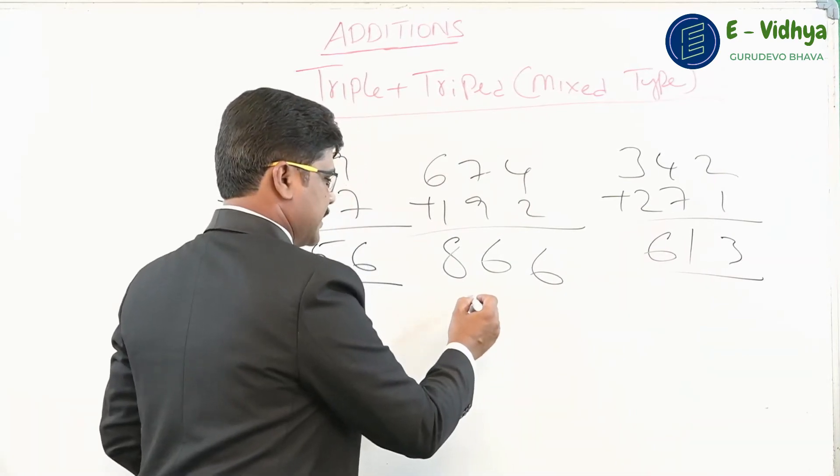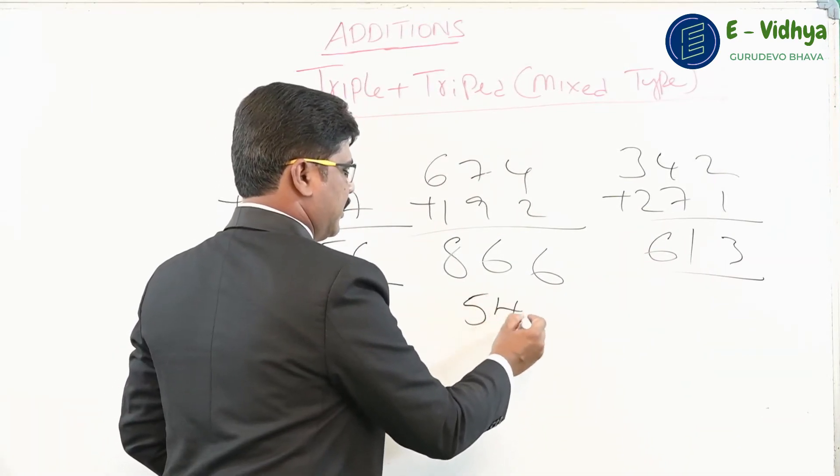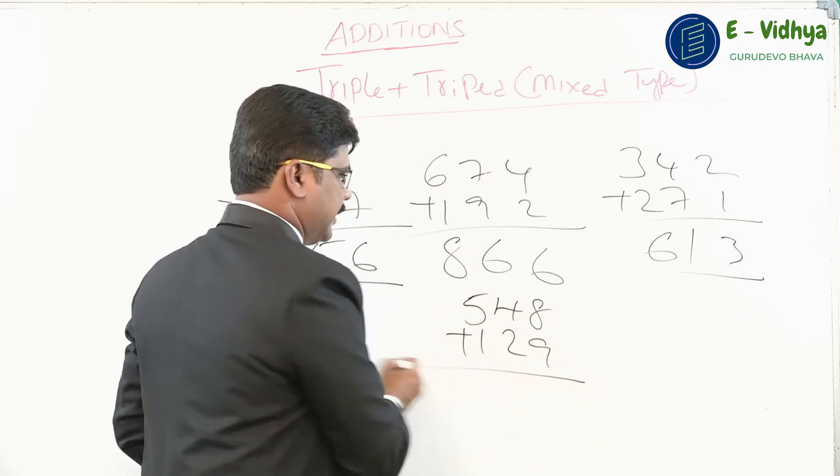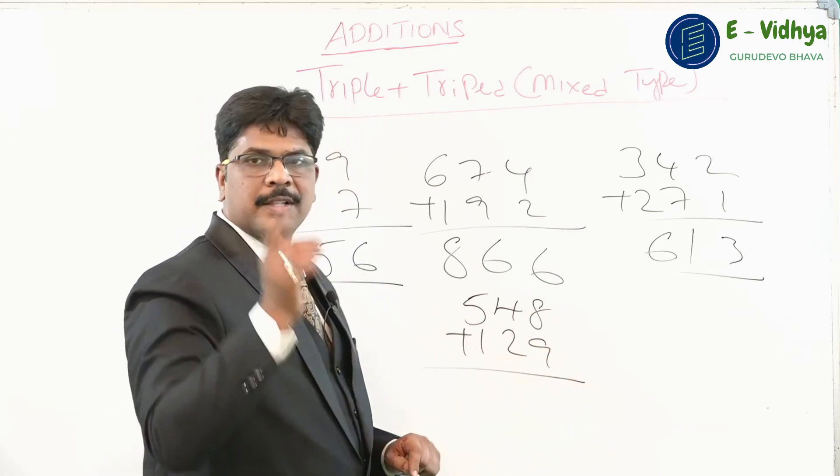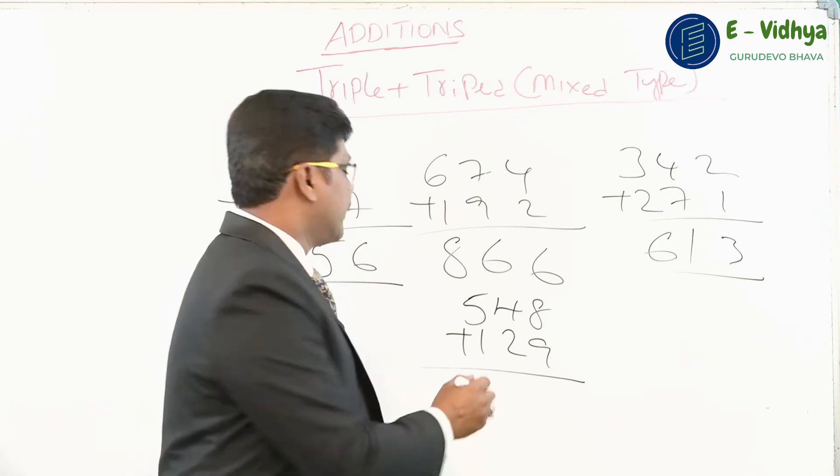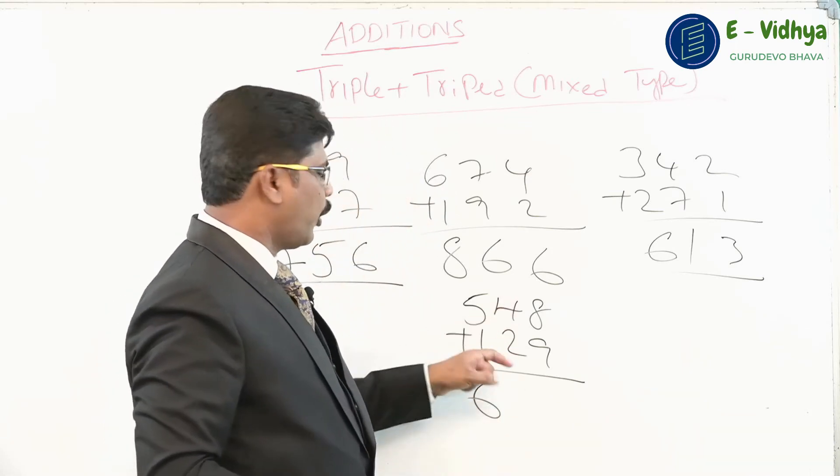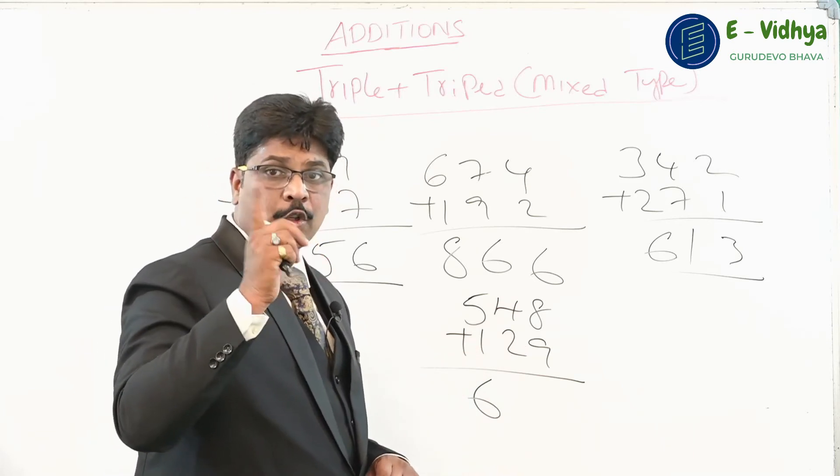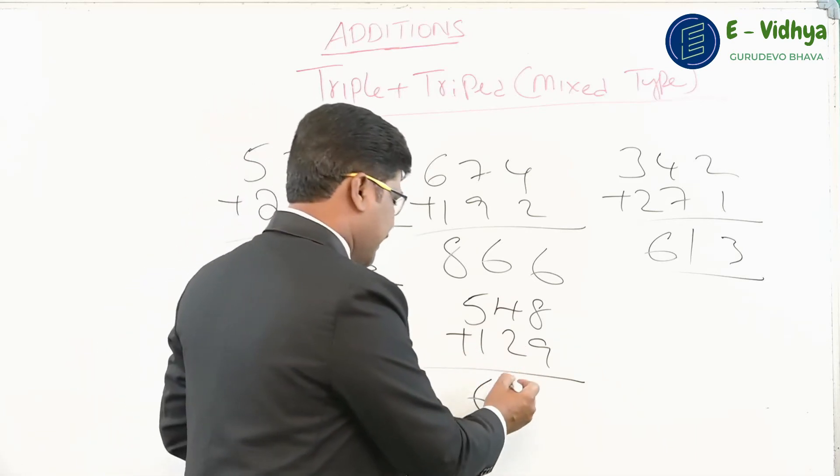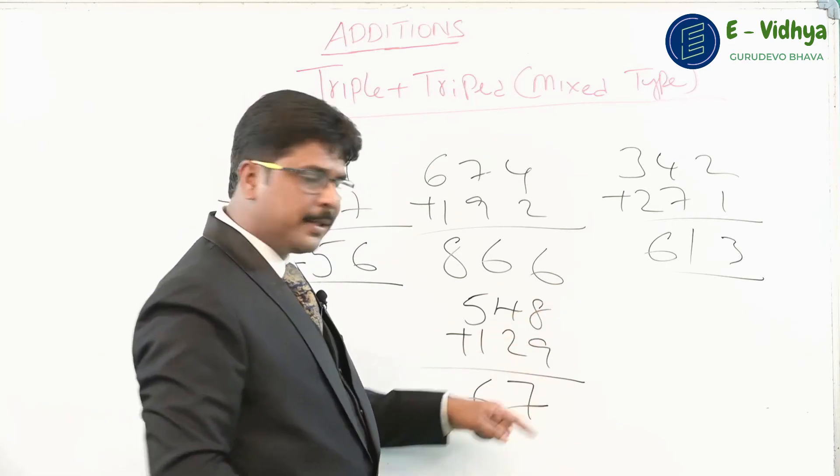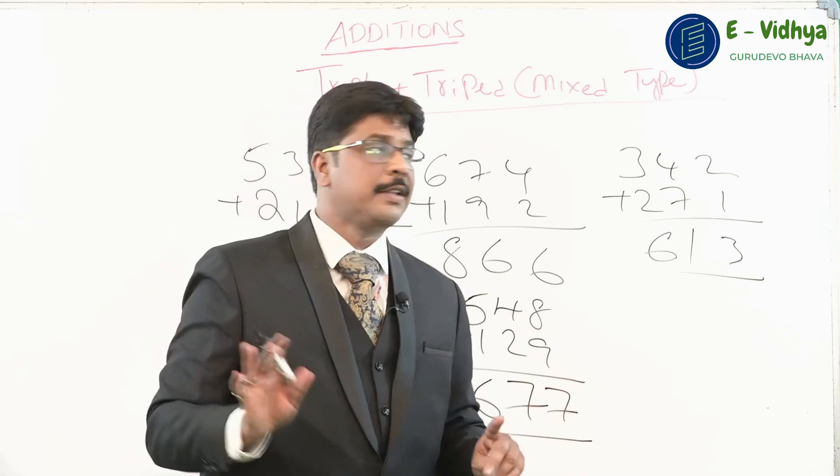One more example: 548 added to 129. Add 5 plus 1 equals 6. Is it 6 or 7? 6 only because next place is a non-carry. Now add 4 plus 2, you get 6. But is it 6 or 7? 7, because next place there's a carry number. Now think of 8 and 9, the number is 7.